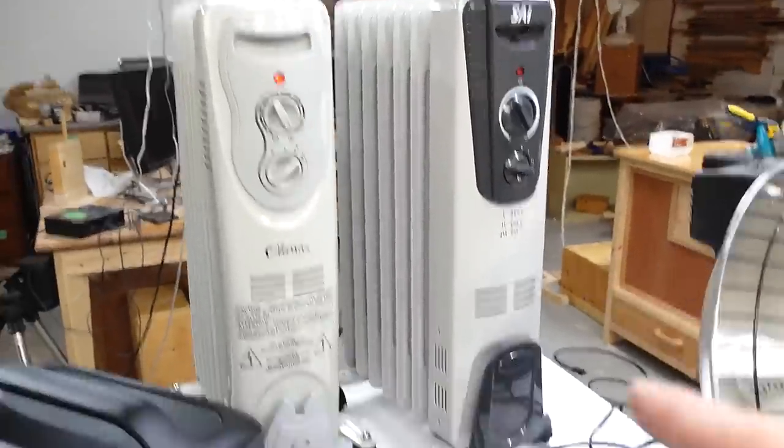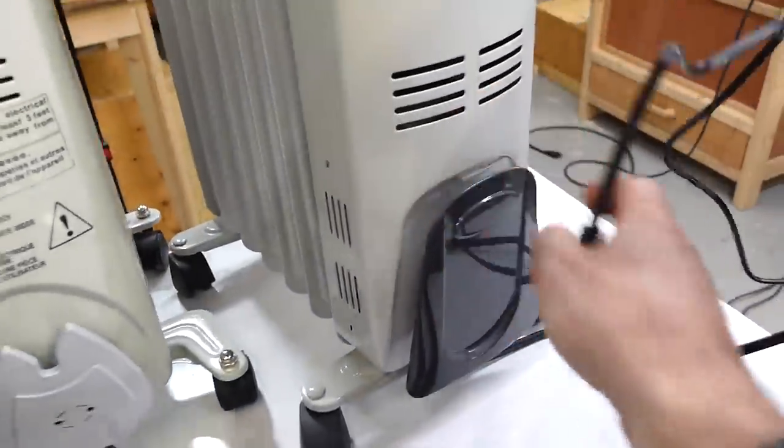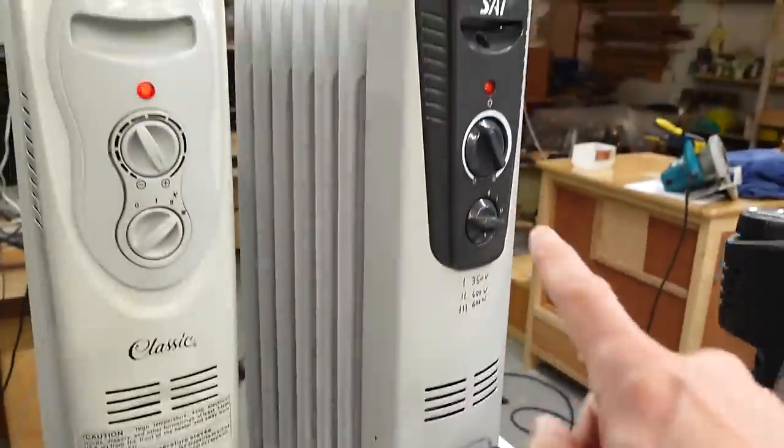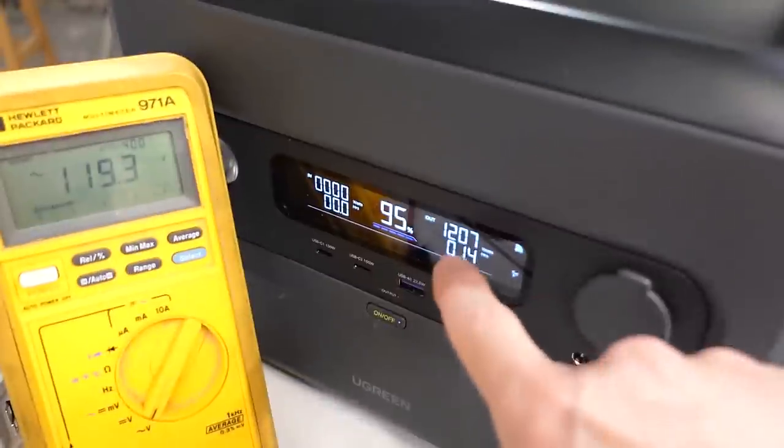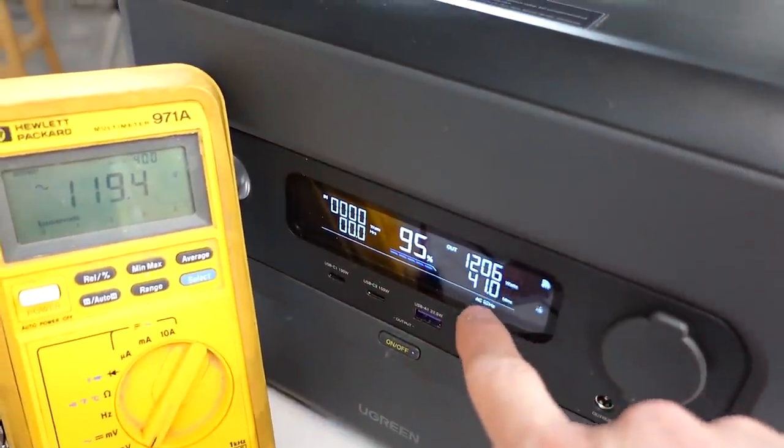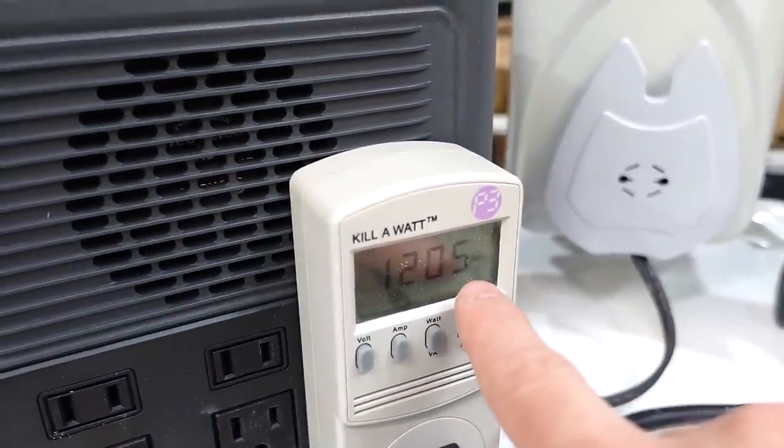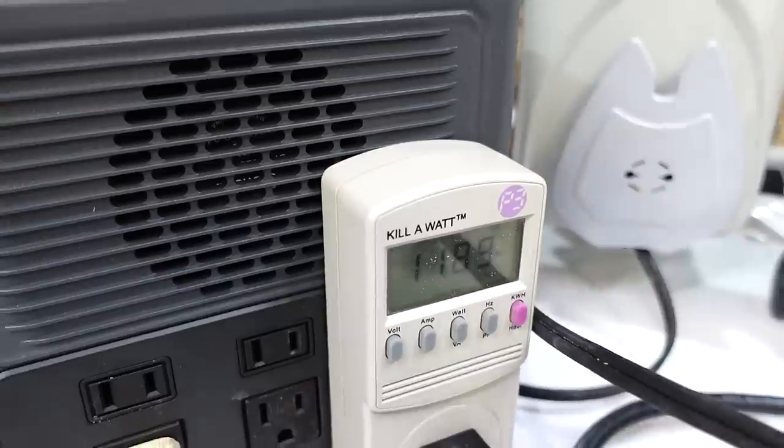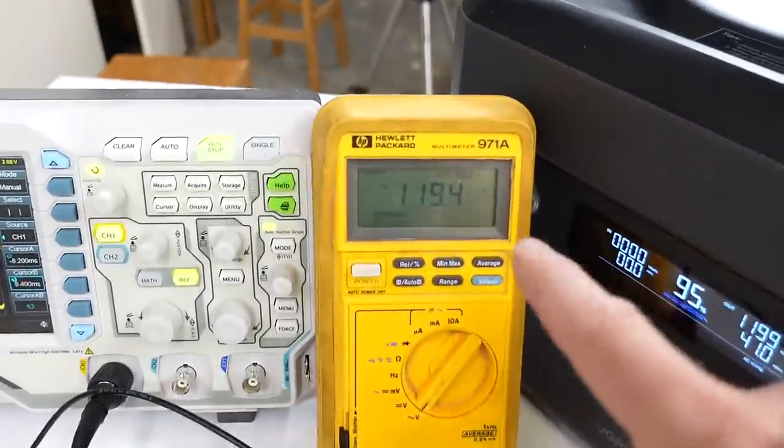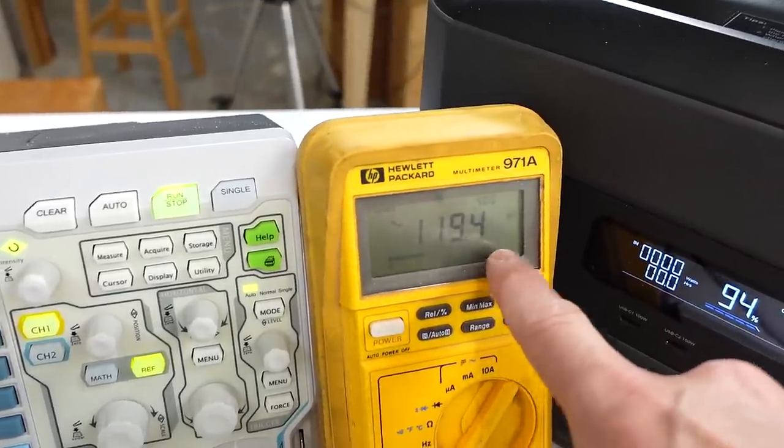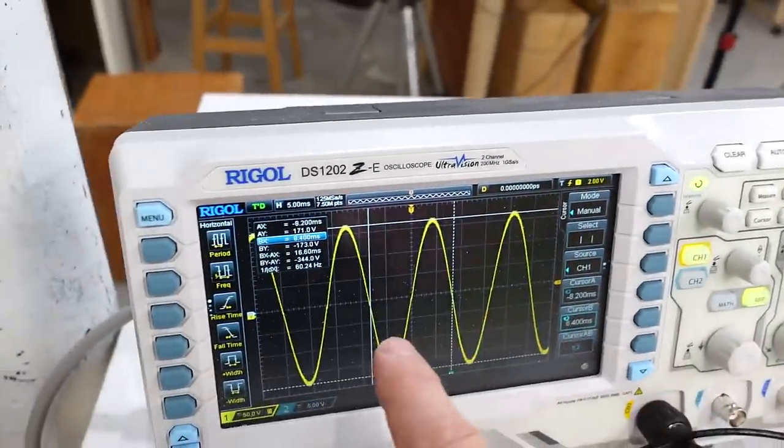Let's plug in a second space heater. Now both of these 600 watts each. This says 1207 watts. Kill a watt says 1190. About the same. Jumps around a bit. Voltage is 119.4, so it's dropped just a tiny bit and we still have a nice waveform.